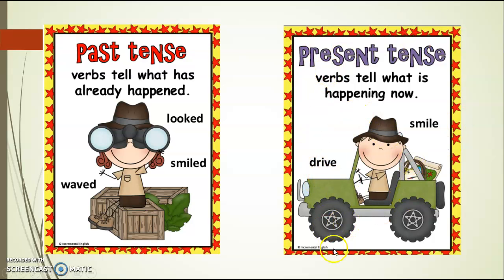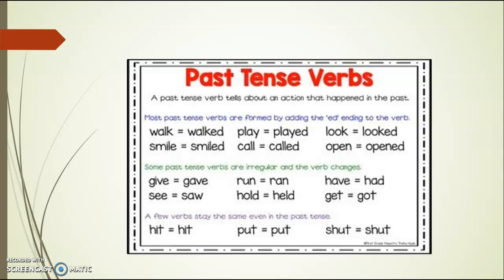Looking is also an example of something happening right now, which is called present tense. In this chart, like we have talked about before, most words you can make past tense just by adding -ed to the verb. Like 'walk' becomes 'walked,' 'smile' becomes 'smiled,' and 'play' becomes 'played,' and so on.